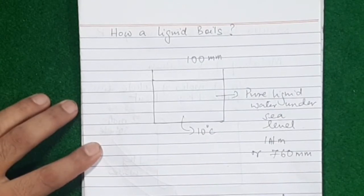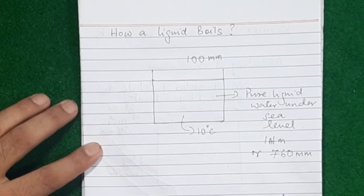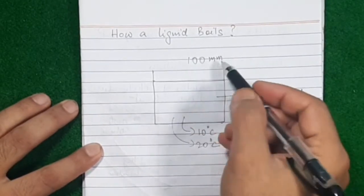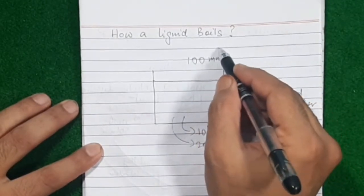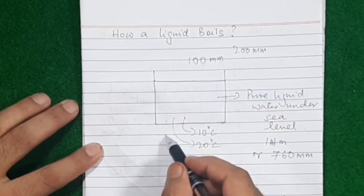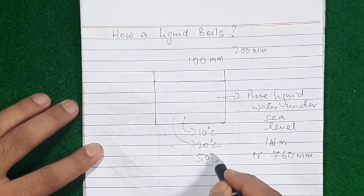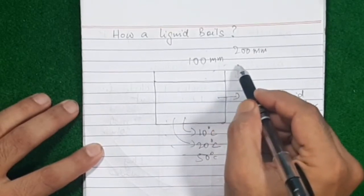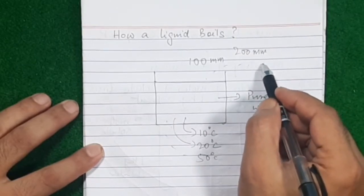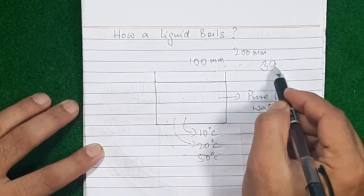What will happen to the vapor pressure of water if you start heating it above 10 degrees? Vapor pressure always increases on heating. So when you heat it to 20 degrees Celsius, vapor pressure rises above 100 — let's say it reaches 200 mm. Heating further to 50 degrees Celsius, vapor pressure rises to around 390 mm.